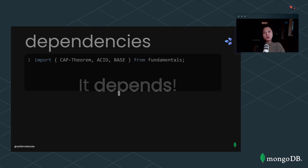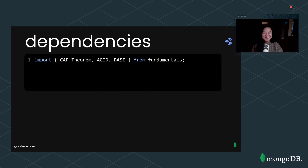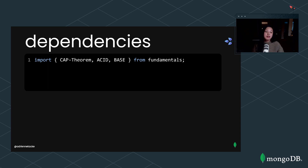We need to import some dependencies into this presentation — the CAP theorem, the ACID properties, and the BASE properties. These play a part in how our guide shapes out when we're considering whether or not to ditch a relational database.